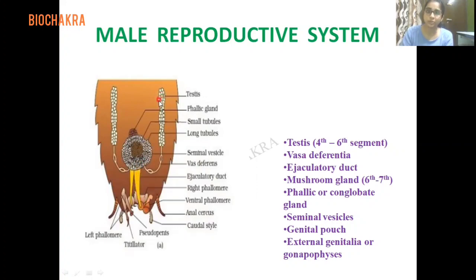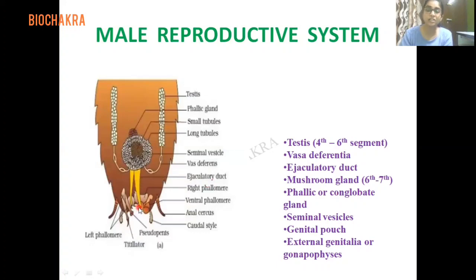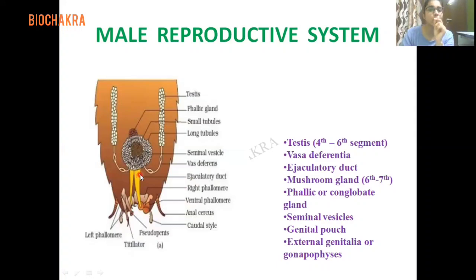The testes are present on either dorsolateral side, in the fourth to sixth abdominal segment. From there, vasa differentia carry spermatozoa toward the ejaculatory duct. The ejaculatory duct — unlike the paired testes — is single and median, and is a muscular duct. It connects to the genital pouch through the male genital pore. Sperms formed in the testes travel via vasa differentia into the ejaculatory duct, which conducts them to the genital pouch via the slit-like male genital pore.